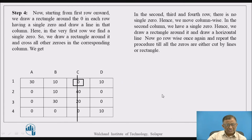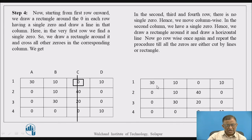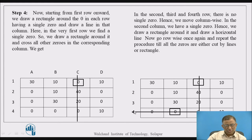Then we look at allocation from the column point of view, going one by one. In the first column there are three zeros, so we don't assign. In the second column there is a single zero — it gets assigned and the column is exhausted. The third column already has an assignment done. The fourth column has two zeros, so we don't decide. At this point, row-wise and column-wise operations yield only two completed assignments, with some zeros still remaining.